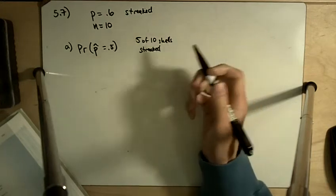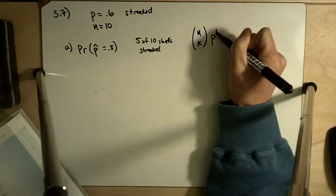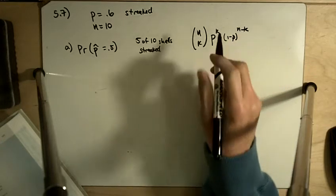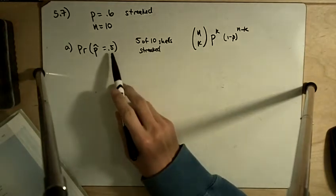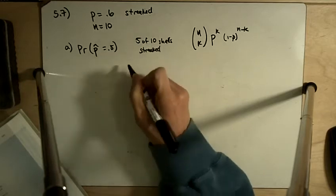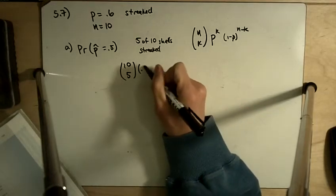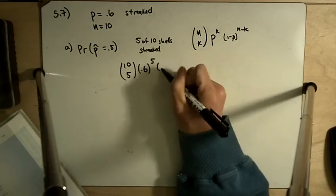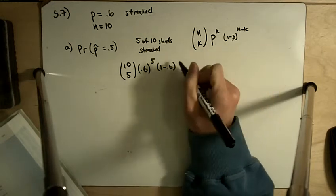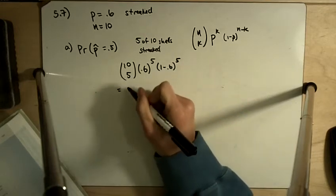So this is basically a binomial problem, and remember binomial is n choose k, P to the k times 1 minus P to the n minus k. Except here, when we're looking at P hat equals 0.5, our k is equal to 5. And so we have 10 choose 5, P is 0.6 to the 5, times 1 minus P, which is 0.4 to the n minus k, which is 5.